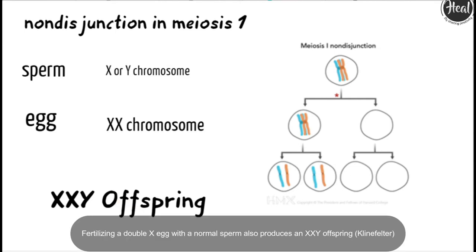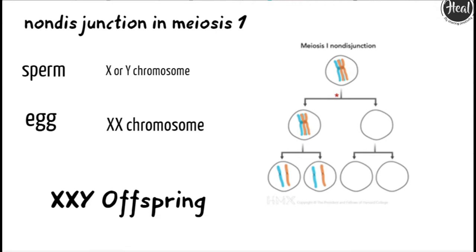Fertilizing a XX egg with a normal sperm also produces an XXY offspring, which is also Klinefelter condition.